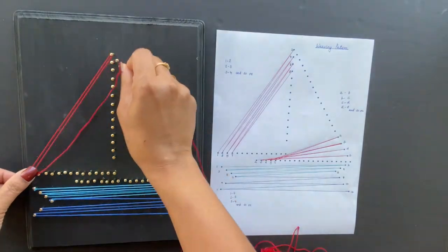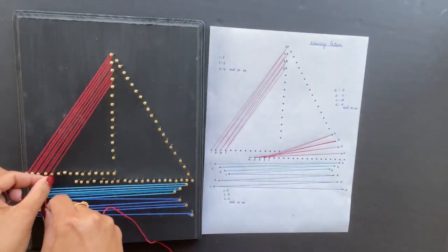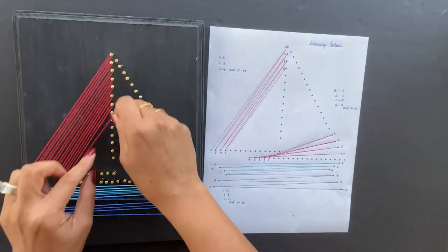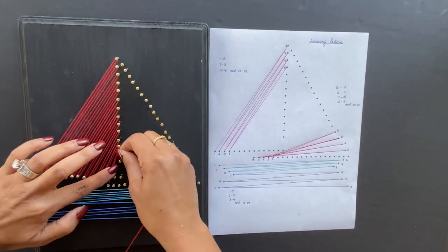Next, I'm going to use red string for the sail. For the first half of the sail, use the sequence 1 to 2, 2 to 3, 3 to 4, and so on. Continue the sequence until the sail is complete.